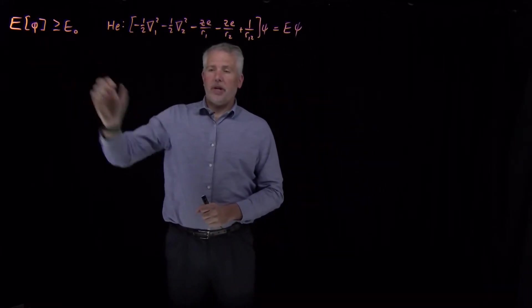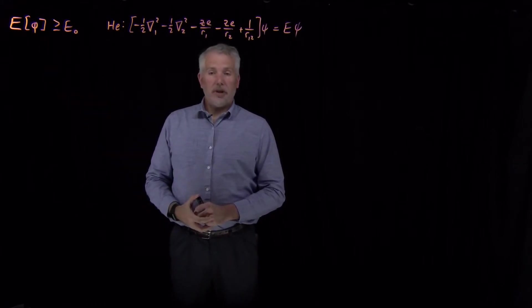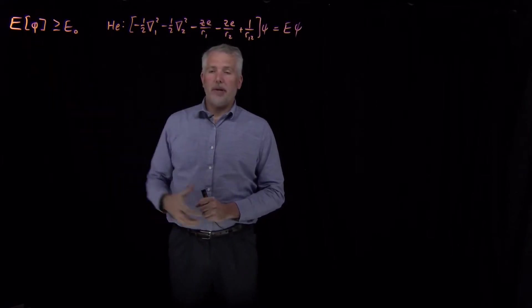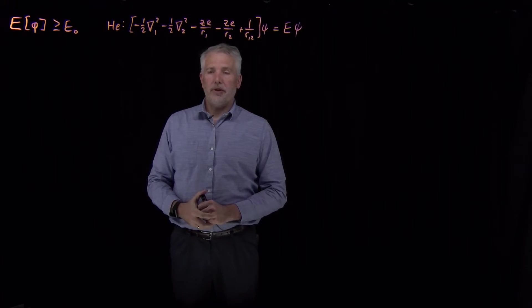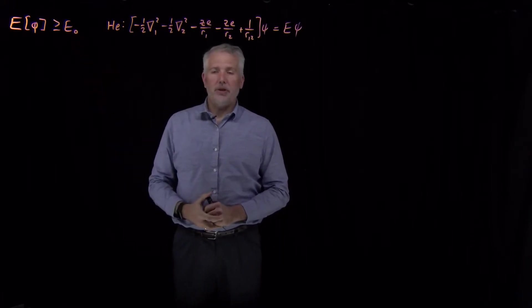But we do know the variational theorem, so we can guess trial functions all day long, vary the parameters in those trial functions, and make the variational energy as low as we can. And the lower we can get that variational energy, the better an approximation of the true wave function we've managed to get, until we can get as close as we can to the true energy.